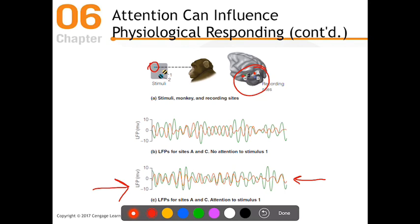When the monkey attends to stimulus one, this attention enhances the communication between neurons at these two different sites. We know this communication results in them synchronizing and demonstrating similar patterns of firing. This is really interesting — it shows how attention can influence this particular response pattern.